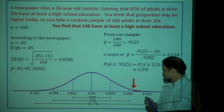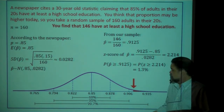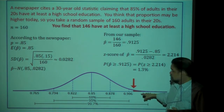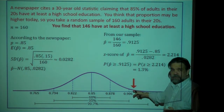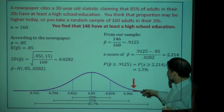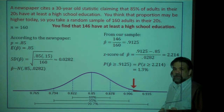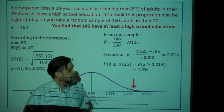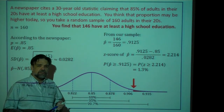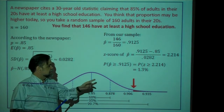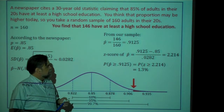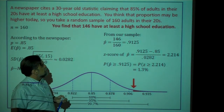What do we actually get? We get 146 people saying they have at least a high school education. 146 out of 160 is 91.25% — that's pretty high. The z-score of that P-hat is 2.214, which makes sense because this is a little more than two standard deviations above the mean. That's fairly unusual — the probability of getting that sample proportion or something higher is only 1.3%.